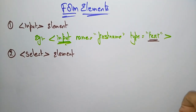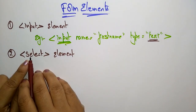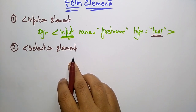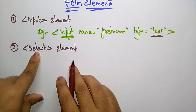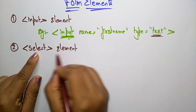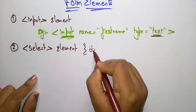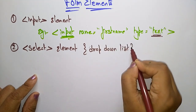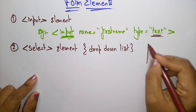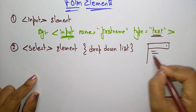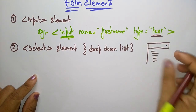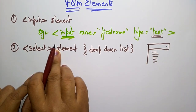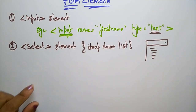The select element defines a drop-down list. Whenever you use the select tag, it defines a drop-down list where the user needs to select an option. Whenever you click, a list will appear. So with the help of this select tag you get a drop-down list.